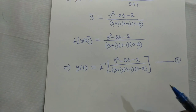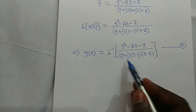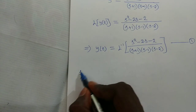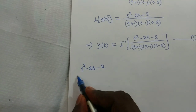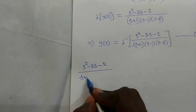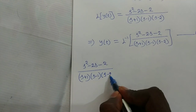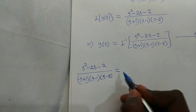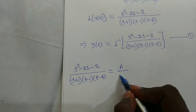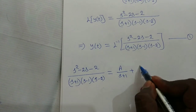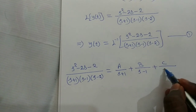By partial fractions, (s² − 2s − 2) / [(s+1)(s−1)(s−2)] can be written as A/(s+1) plus B/(s−1) plus C/(s−2), since all factors are linear terms.